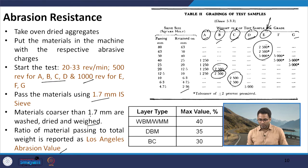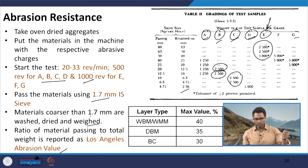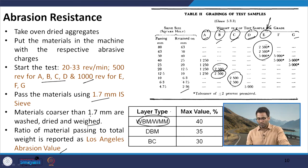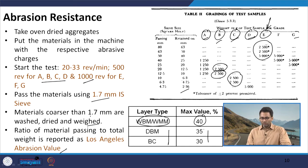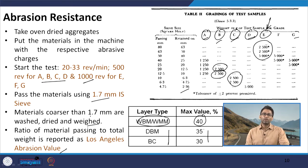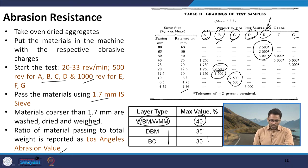Just like the impact value, for different types of mixes placed in different pavement layers there are different specifications. For WBM and WMM placed as base layer, the maximum permitted value is 40 percent; for DBM it is 35 percent; and for BC it is 30 percent. However, I would like to reiterate that not necessarily an aggregate having a higher Los Angeles abrasion value will have poor performance — in fact, many times aggregates having higher abrasion value have shown good performance in the actual field.